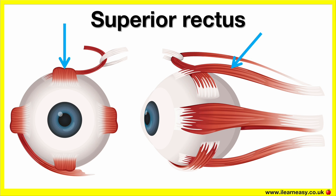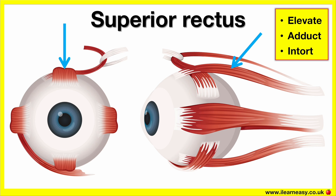Superior rectus. The origin of the superior rectus is the common tendinous ring. The insertion of the superior rectus is the superior part of the sclera. The actions of the superior rectus are that it elevates, abducts, and intorts. This means that it helps us to look up and in.